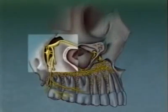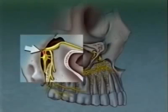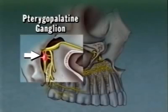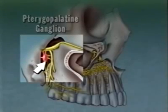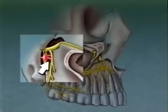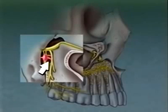The short pterygopalatine nerve trunks descend vertically to course through the pterygopalatine ganglion. Branches of the pterygopalatine nerve emanating from the ganglion distribute sensory fibers to the midface. These branches include the orbital nerves and posterior nasal nerves, which innervate the ethmoidal and sphenoidal sinuses, periosteum of the orbit, nasal turbinates, and posterior nasal septum.